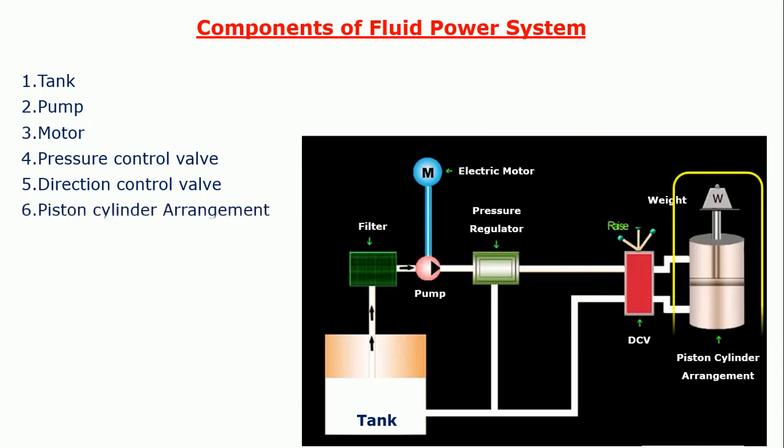Sixth one is piston cylinder arrangement. It is also called as an actuator, which converts pressure energy of hydraulic oil into mechanical force. Seventh one is pipes or hoses. It is used to carry the hydraulic oil from one location of fluid power system to other location.